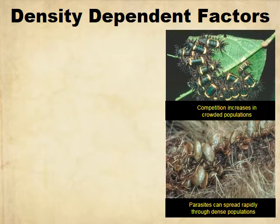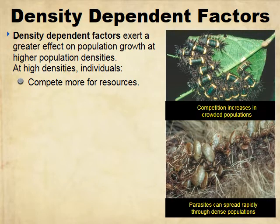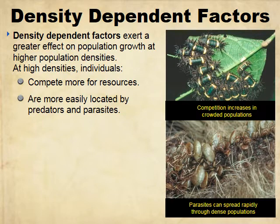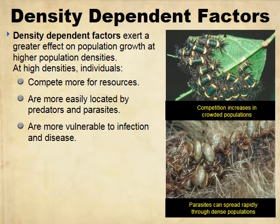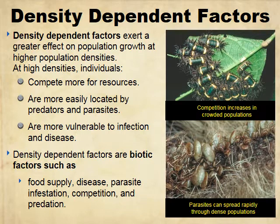You have density-independent factors and density-dependent factors, which determine how many organisms are in a population. Density-dependent factors have a greater effect at higher population densities. At higher densities, individuals compete for more resources, are more easily located by predators and parasites, and are more vulnerable to infection and disease because they're closer together. These are usually biotic factors: food supply, disease, parasite infestation, competition, predation, and so on.